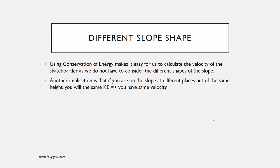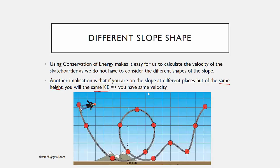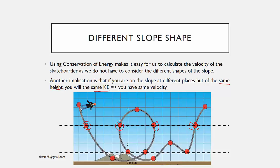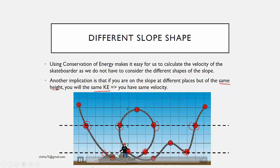Another implication is that if you are on the slope at different places but at the same height, you will end up with the same kinetic energy, which means the same velocity at that point. So for a skateboarder going through a difficult course, the speed at any point of the same height will be the same — she slows down going up and picks up speed coming down.